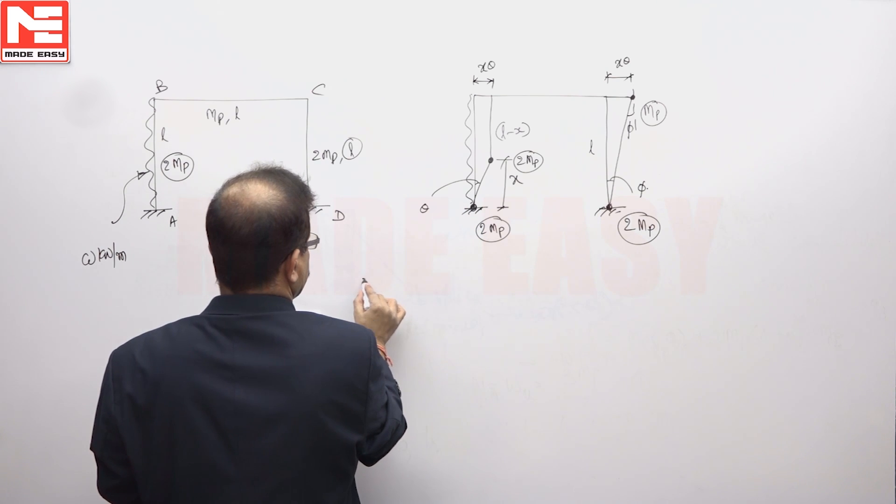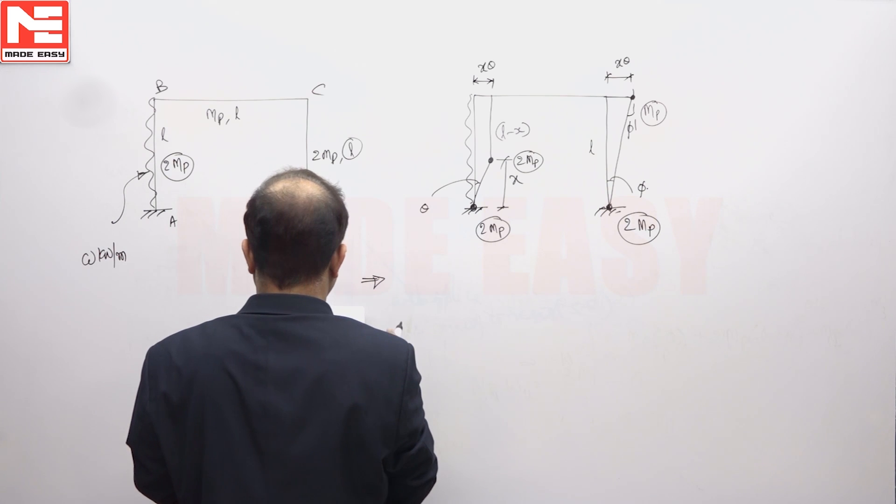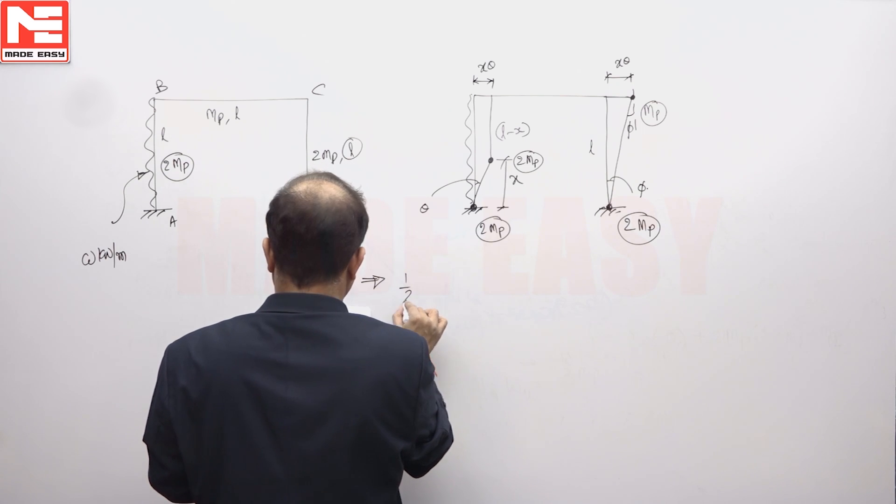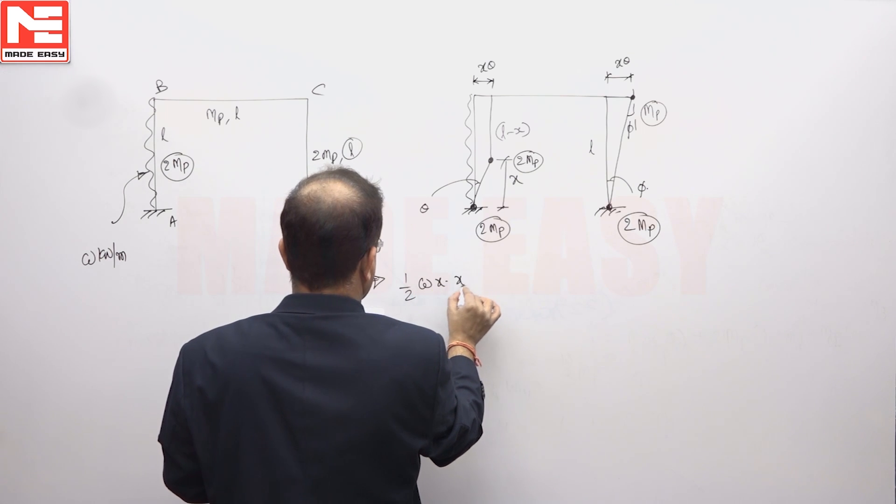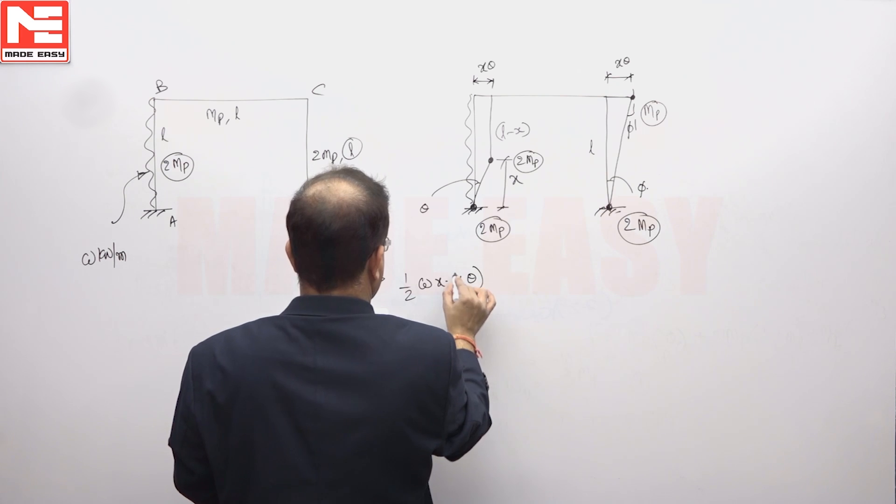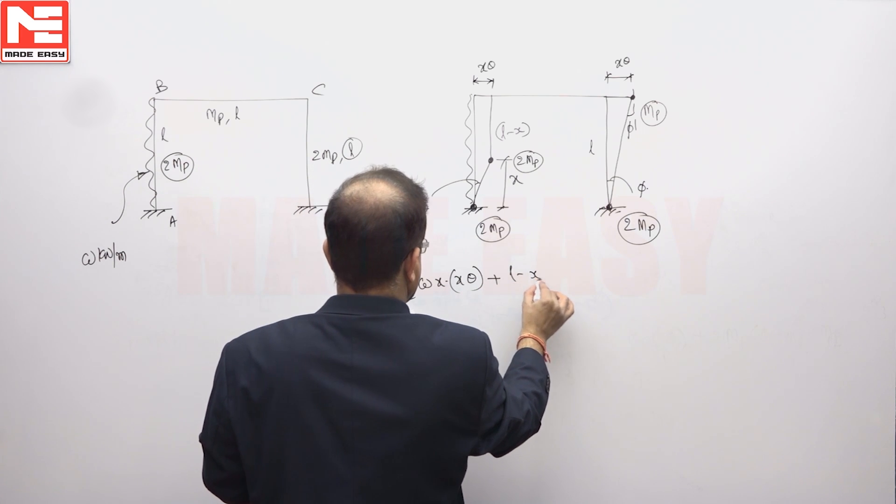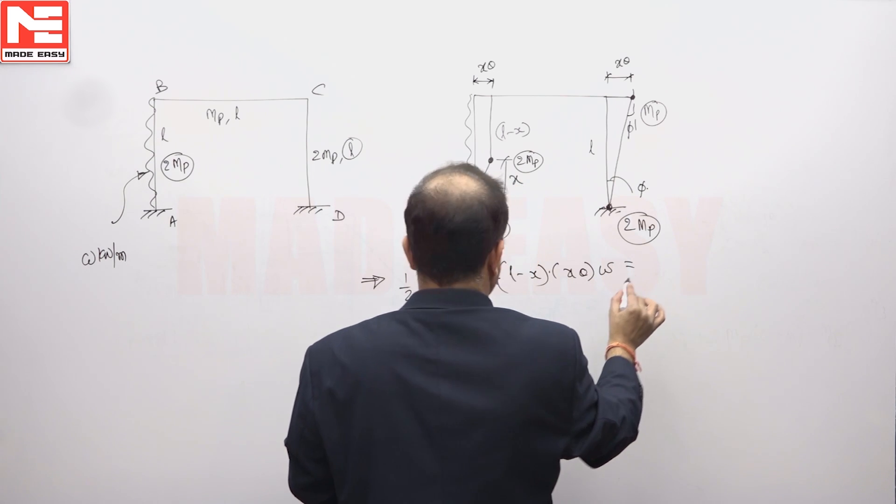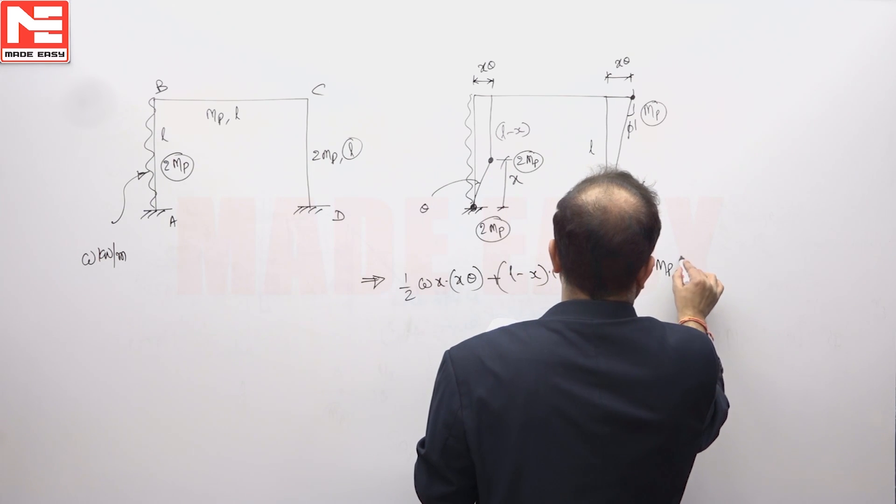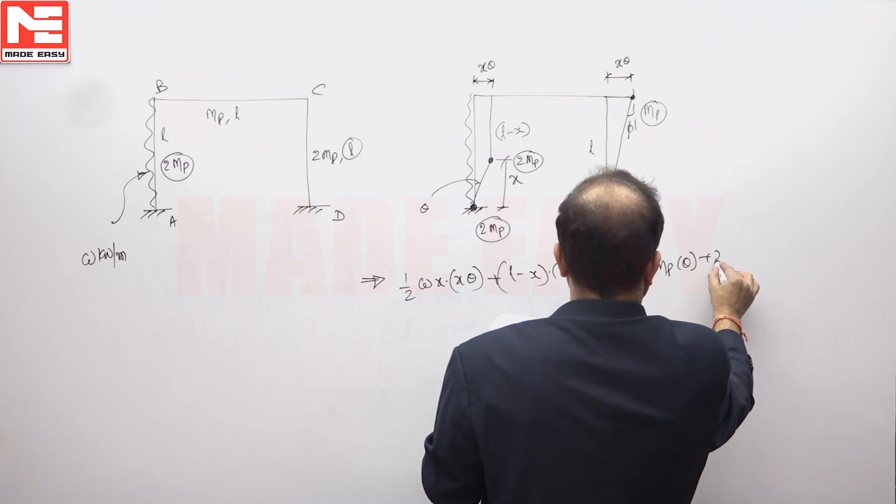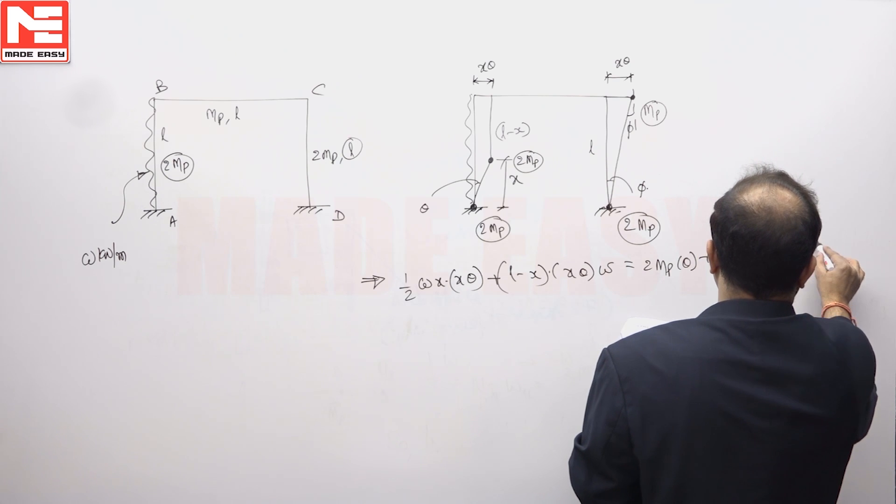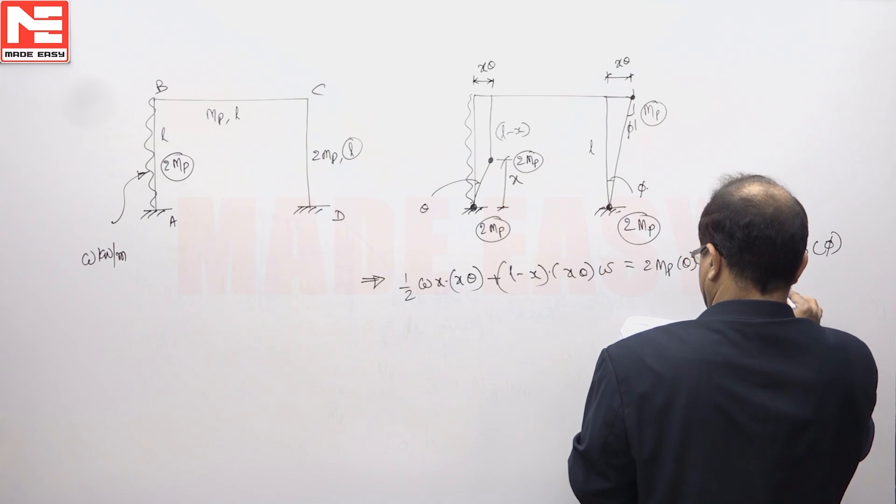So if you take the external work done plus internal work done, you will get UDL, if you take half W X into X theta plus L minus X into X theta into W is equal to 2MP into theta plus 2MP into phi plus 2MP into phi.